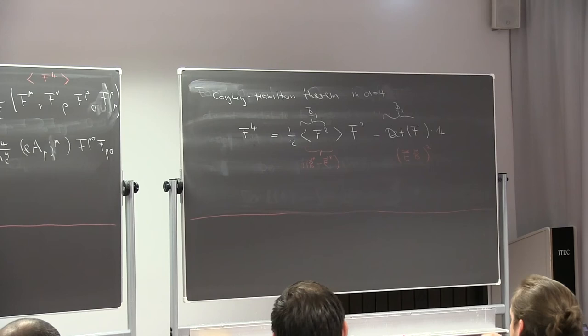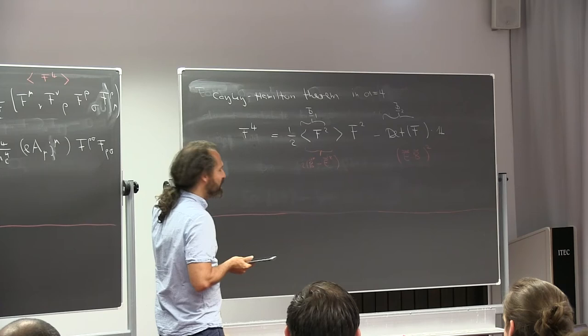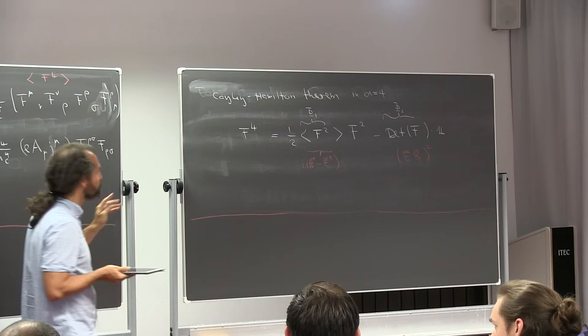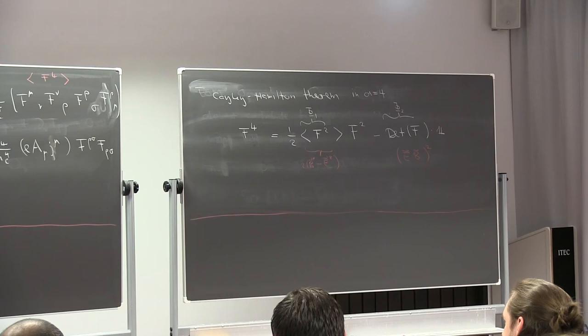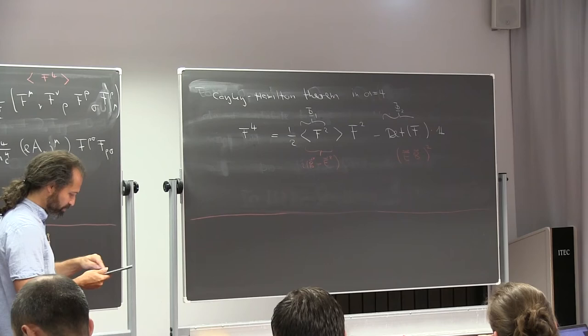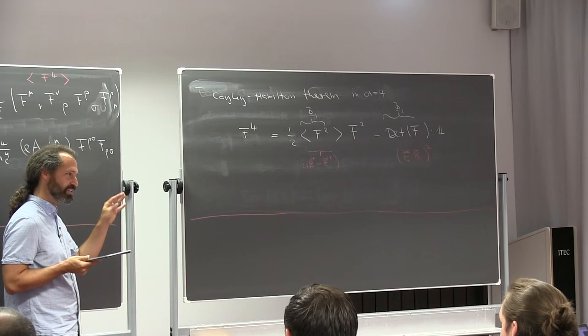We've now reduced the problem to writing down invariants for these scalar fields phi_1 and phi_2. Mathematicians have thought a lot about such invariants. There's something called the Hilbert series, where you write a nice rational function, and if you expand it as a Taylor series, it tells you exactly how many invariants you can construct at each order. Very recently, people have also managed to implement integration-by-parts relations and equations of motion into such a formalism — a method which spits out the operators at higher orders without much work.